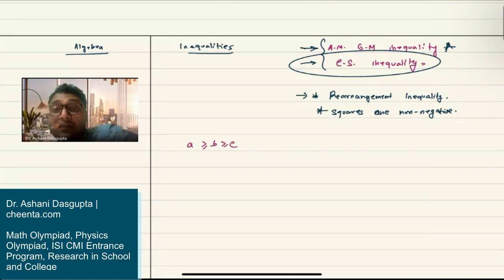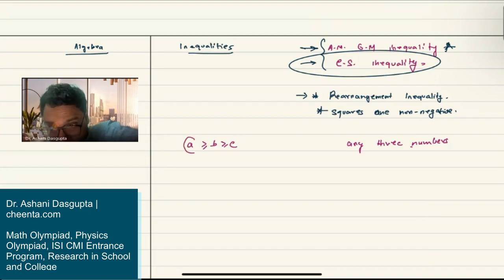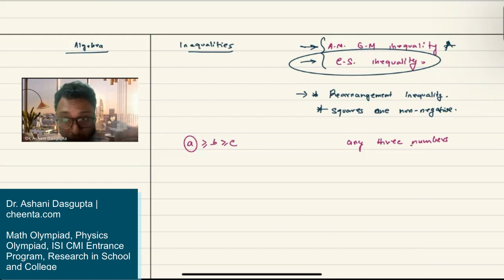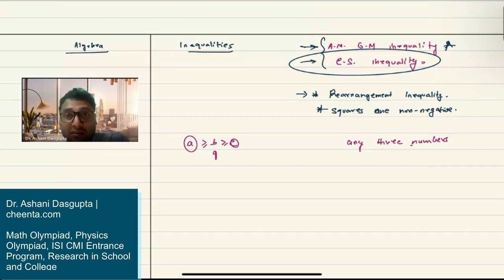If you have any three numbers, one of them will be the largest of all — you can call that a. Then the other one will be the smallest, call that c, and the middle one is b. Now it is possible that all three of them are equal. What the rearrangement inequality is saying is that you can combine these sequences with each other and find the largest possible value.